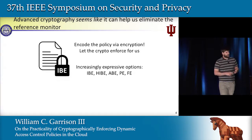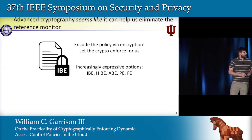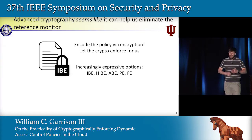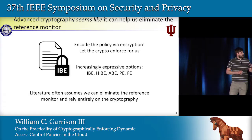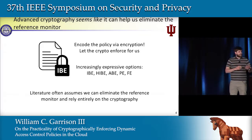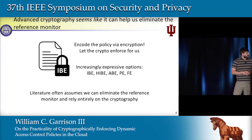identity-based encryption, hierarchical IBE, attribute-based encryption, all through predicate and functional encryption. And the literature on these often seems to assume, at times implicitly, that there isn't a reference monitor needed if we trust this crypto to enforce our policies.